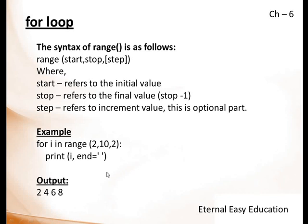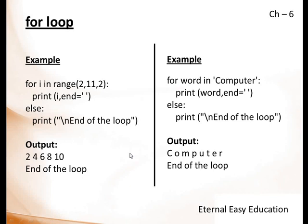See this example also: for i in range(2, 11, 2), there is an else part, else part end of the loop. So as it is 11 here, 2, 4, 6, 8, and 10. We can also print a string using a for loop. This is easy only in Python, not in C++.